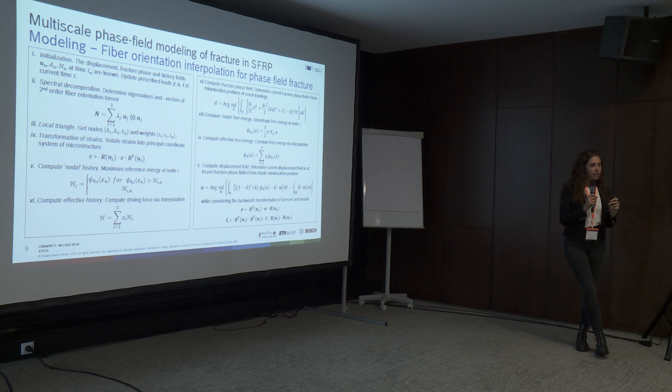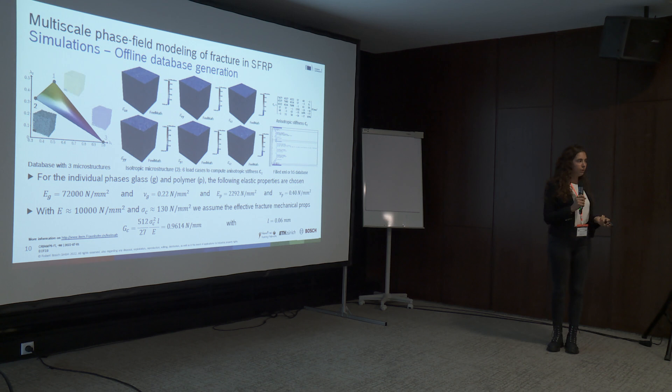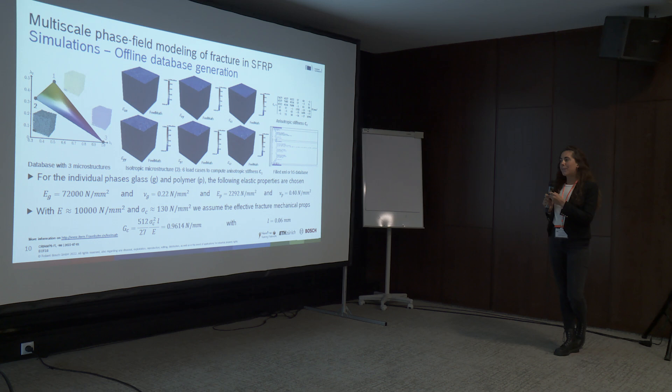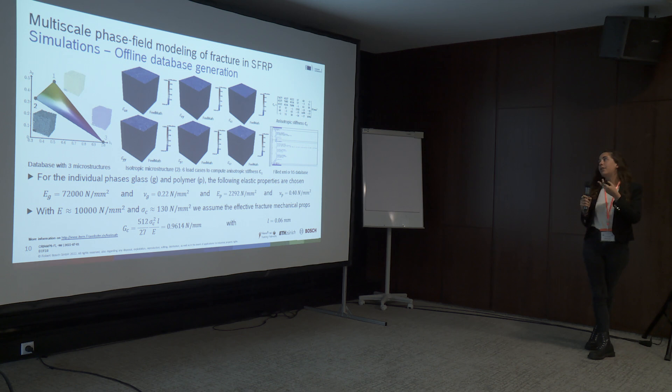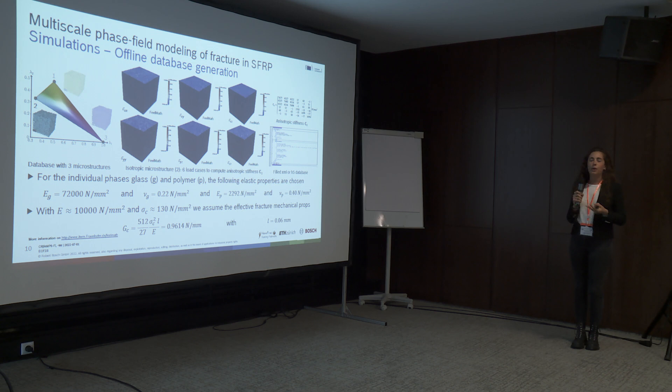All calculations are done in the local coordinate system, so a backwards transformation back to the global coordinate system is essential. As an example of a micromechanical simulation, here is the isotropic configuration: we create this microstructure virtually and submit it to six different load conditions to obtain the anisotropic stiffness matrix.